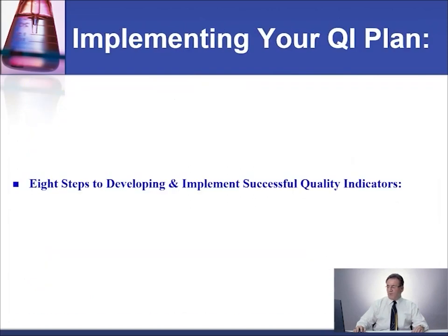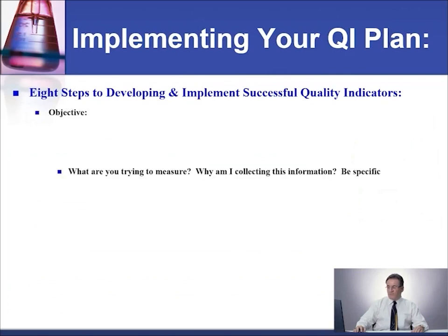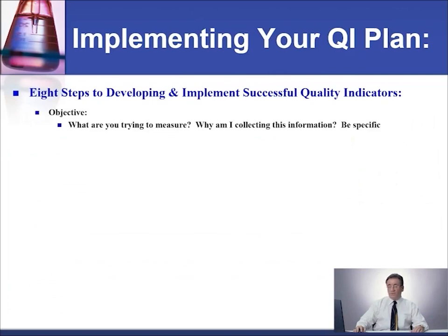Implementing your quality indicator plan. There are 8 steps to developing and implementing a successful quality indicator. You need an objective, and in an objective, you need to ask yourself the following questions: What are you trying to measure? Why am I collecting this information?